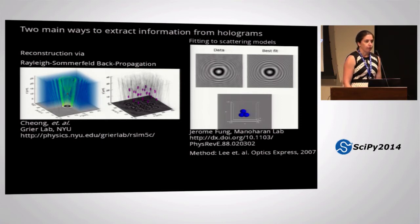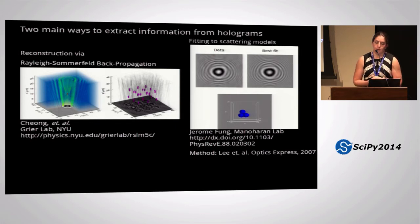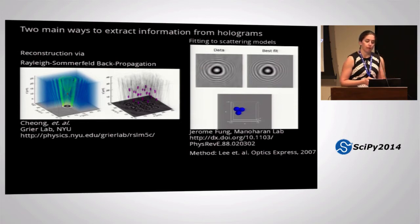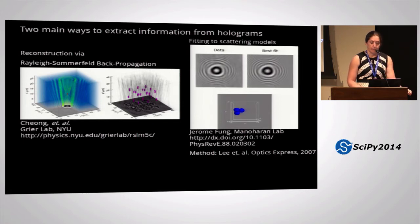Our other technique is fitting to a complete scattering model. And in this technique, we calculate the forward scattering off of these spheres, which we use Mie scattering theory named after Gustav Mie, or a multi-sphere technique that includes the scattering from one sphere to another and then to the detector. And so here's a data, a video of data and a best fit, and then the rendering of the positions of the three spheres in that best fit over time.